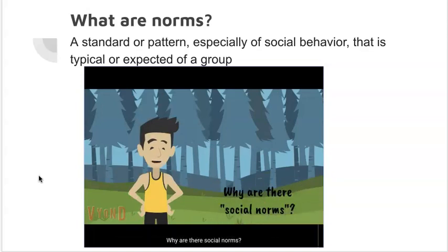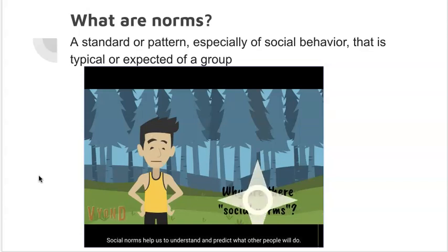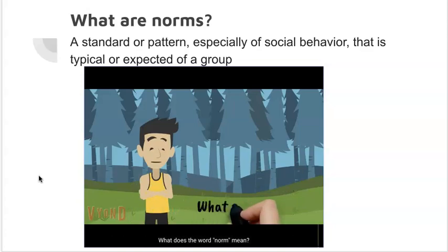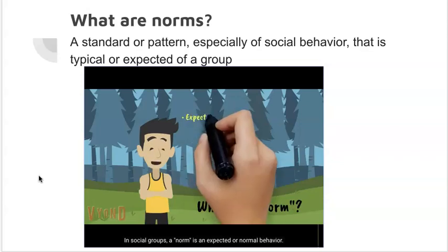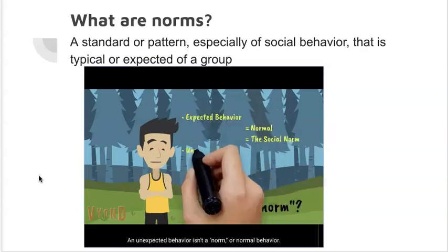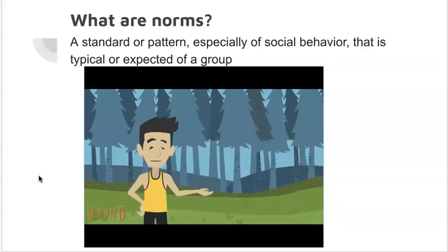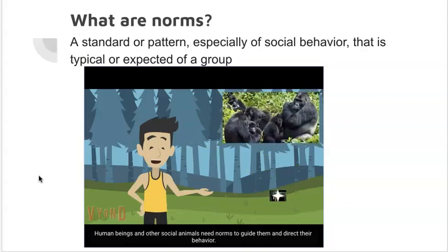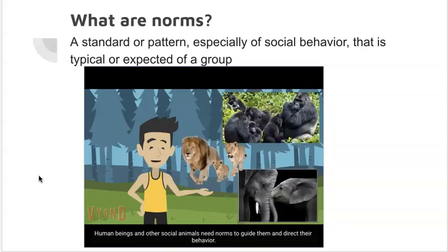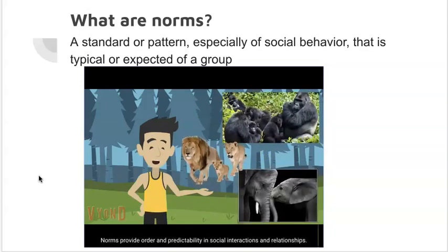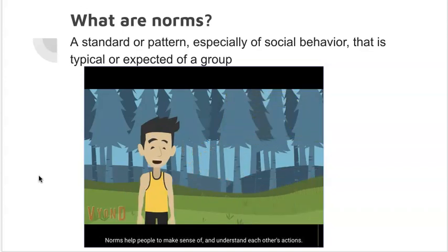Why are there social norms? Social norms help us to understand and predict what other people will do. Norm is short for normal. In social groups, a norm is an expected or normal behavior — an unexpected behavior isn't a norm. Human beings and other social animals need norms to guide and direct their behavior. Norms provide order and predictability in social interactions and help people make sense of each other's actions.